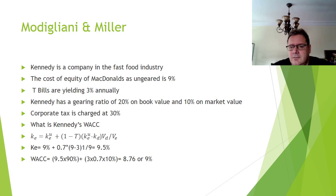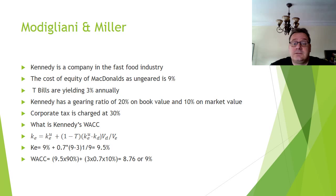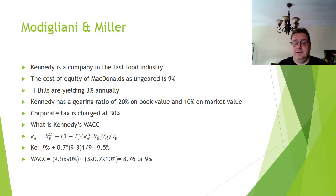Your weighted average cost of capital is: (9.5% × 90) + (3% × 0.7 × 10), giving approximately 8.76%. Round it to the nearest whole number for use with discount tables. The examiner has sometimes rounded down, but I personally would round up to avoid a wrong accept/reject decision when the NPV is close to zero. Use that rounded figure as your discount rate.